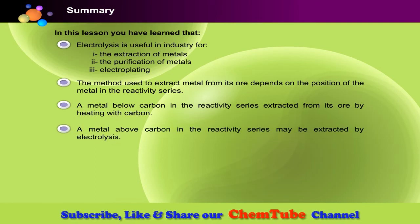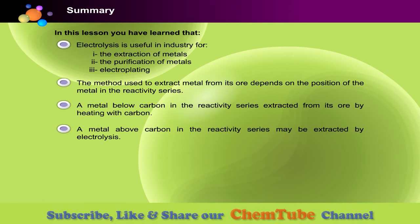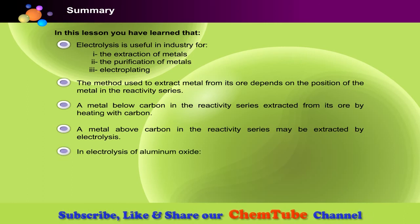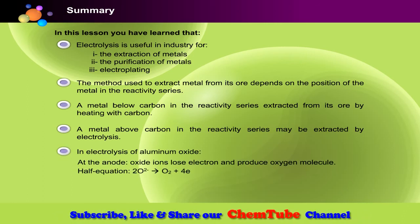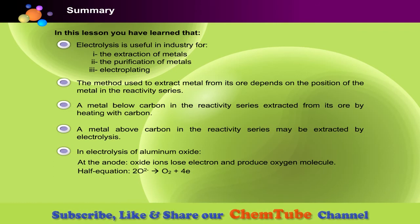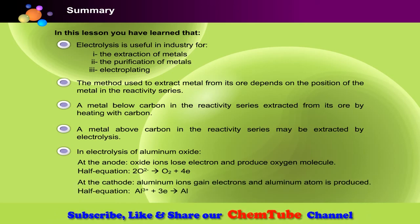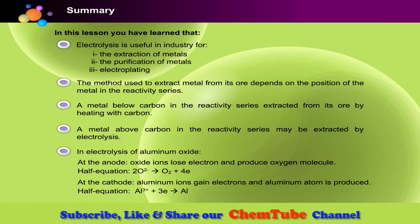In the electrolysis of aluminium oxide, at the anode, oxide ions lose electrons and produce oxygen molecules. At the cathode, aluminium ions gain electrons and aluminium atoms are produced.